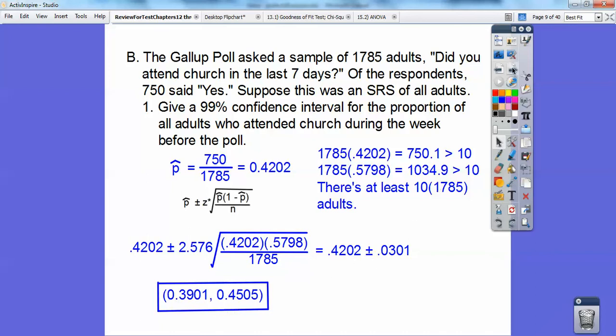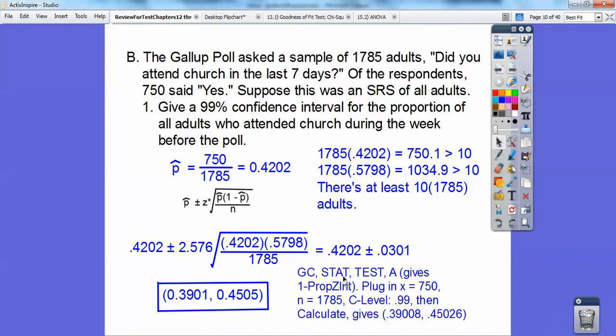You could do this in your graphing calculator also. If you go to stat, test and then A gives the one proportion Z interval. So you scroll down to A and then plug in X equals 750, N equals 1785, C level 99 and then calculate. And we get pretty close to what we did by hand right there.